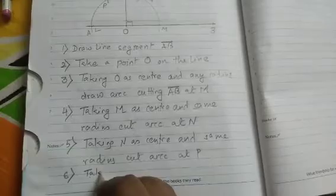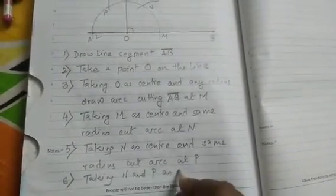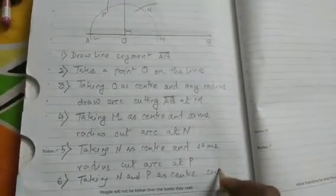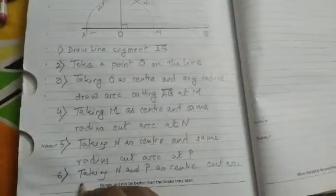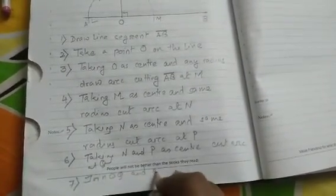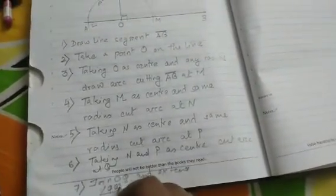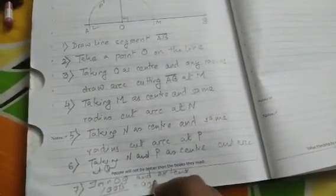Now sixth point, taking N and P as center, cut arc at Q. Seventh point, join OQ and extend. So I will get angle QOB is equal to 90 degrees. So that's it, writing the construction of 90 degrees.